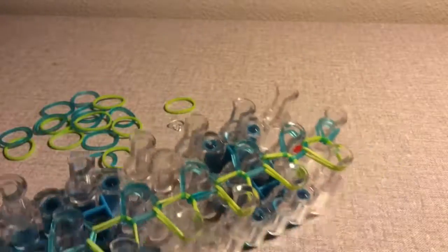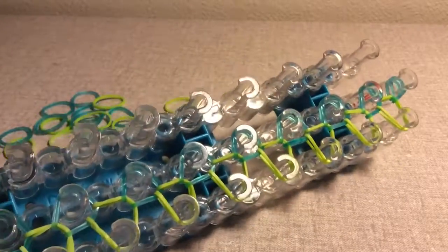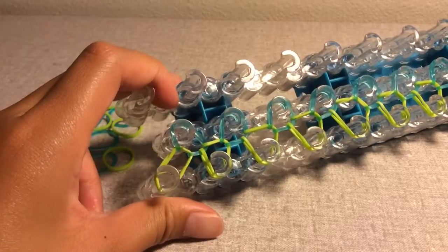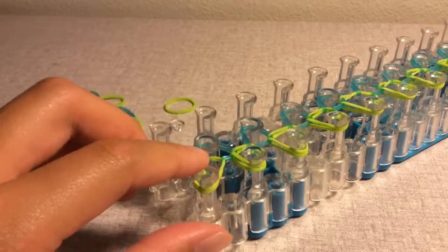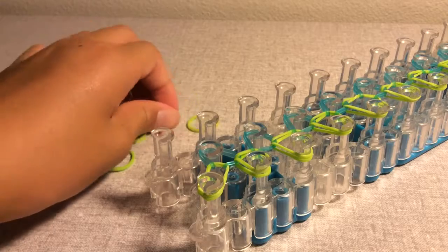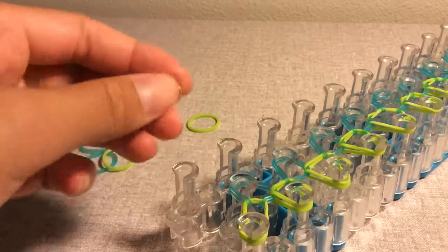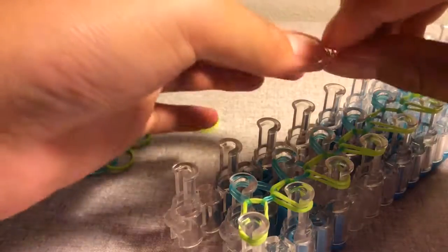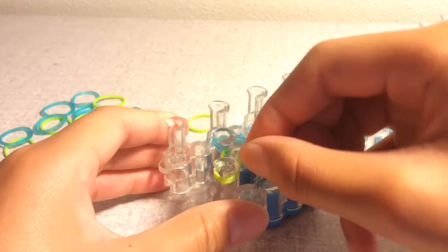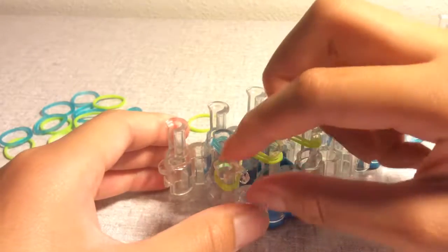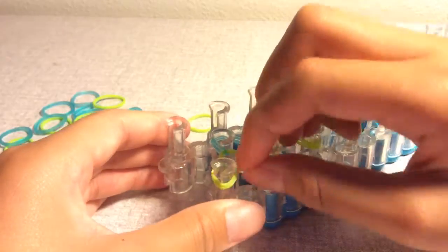I am now done looming my bracelet. And this is what it should look like, just like that. So on this pin here, it doesn't really matter where you put your C-clip, but you want to take your C-clip and you want to just put it on the bands like that and make sure that your C-clip has the two bands.